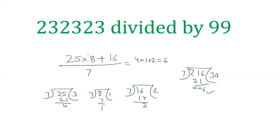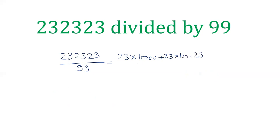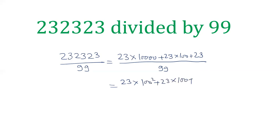Applying this rule, we will solve the question 232323 divided by 99. This can be expanded as 23 into 10000 plus 23 into 100 plus 23, which equals 23 into (100 squared plus 100 plus 1), all divided by 99.